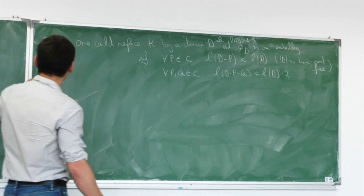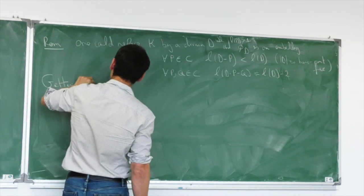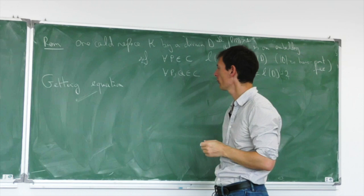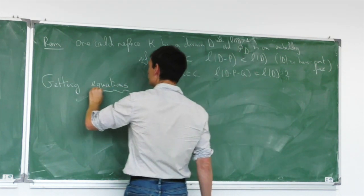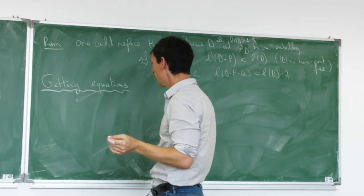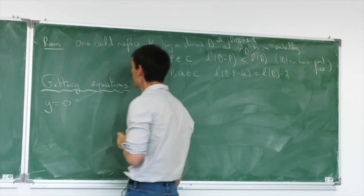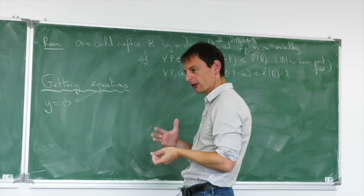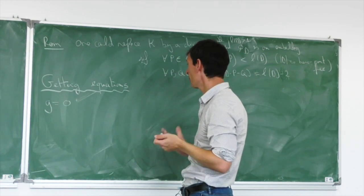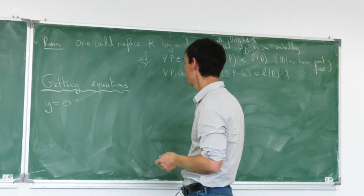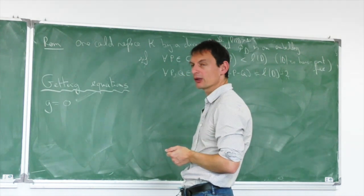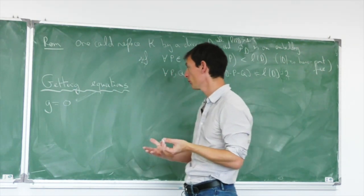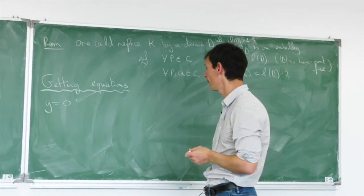Now let's use this to get equations for curves of low genus, starting with the case g = 0. If I want to stay over my field k, I know only one rational divisor and it is κ. But κ has degree 2g − 2 = −2, so the degree is negative and there is no nonzero function inside L(κ). Instead, let's look at −κ.